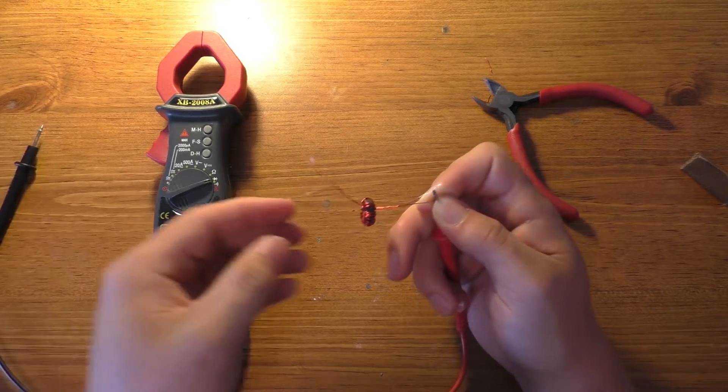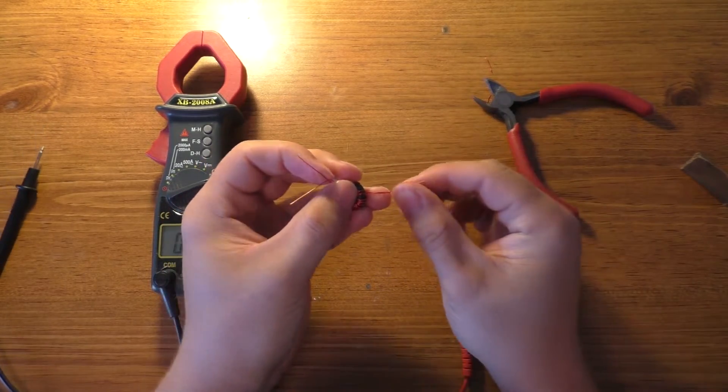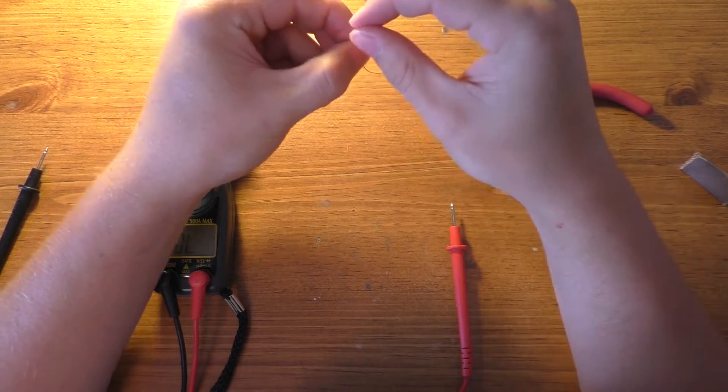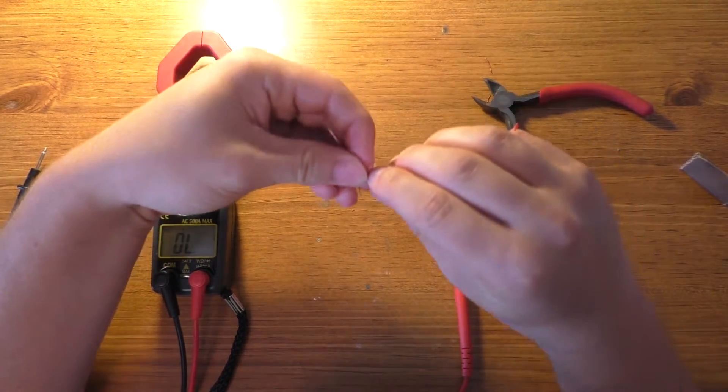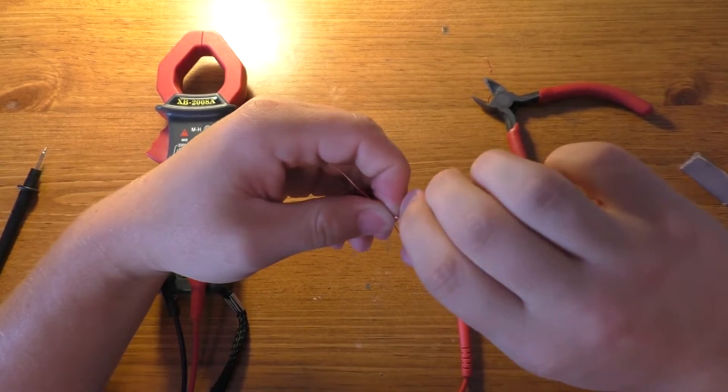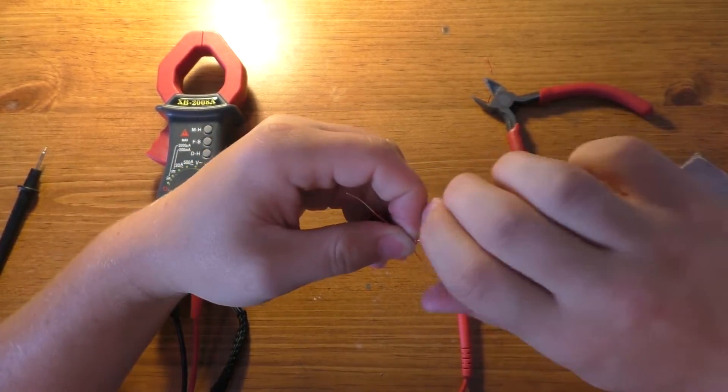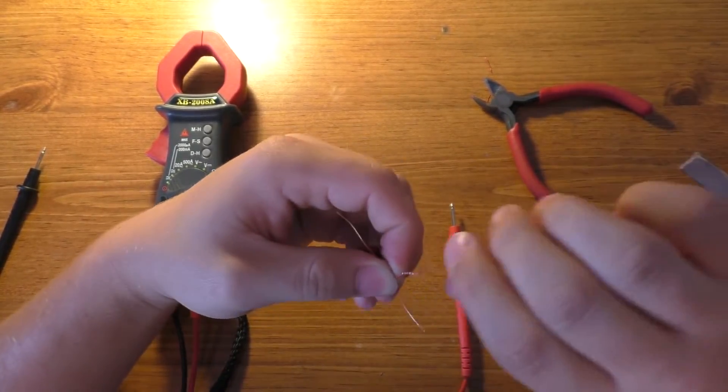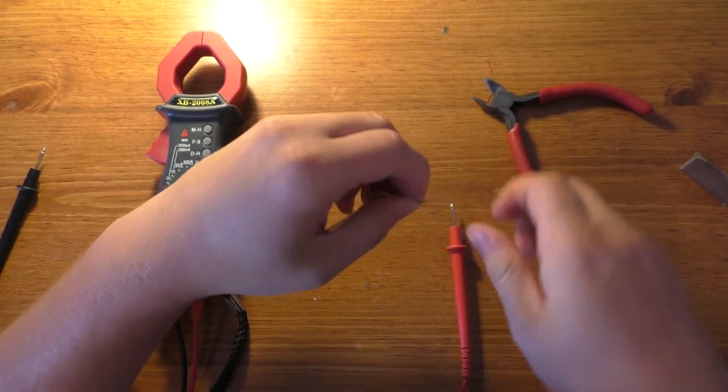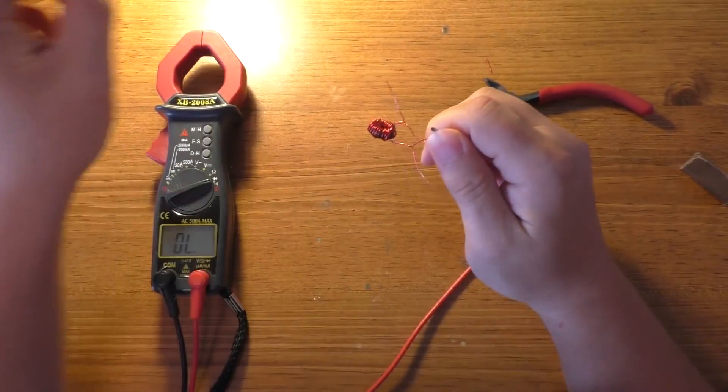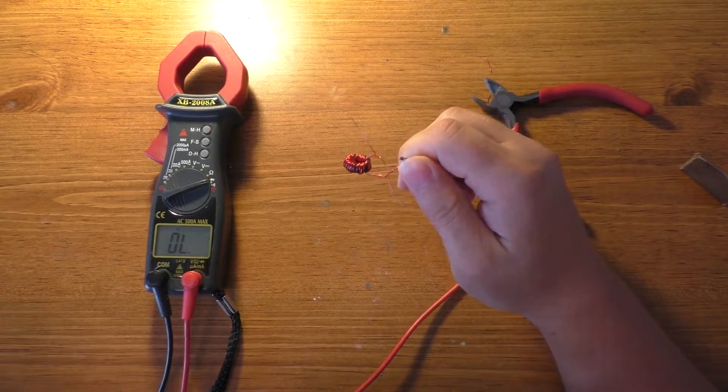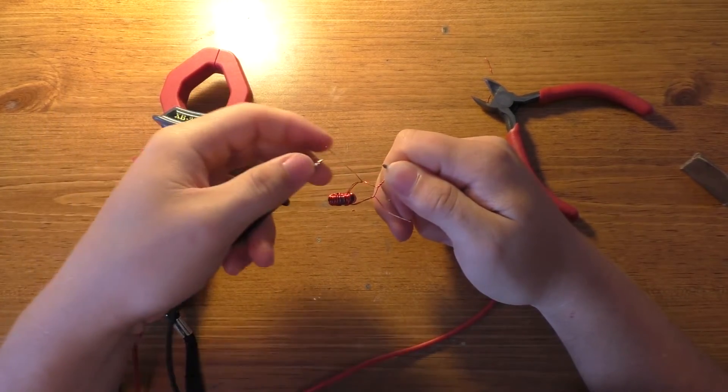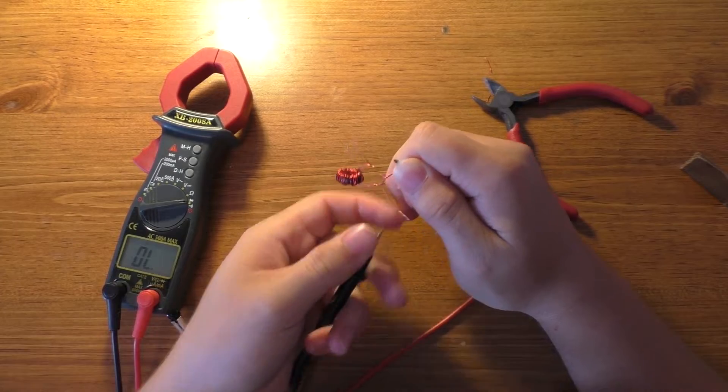So if I touch the probe to this one, I shouldn't get them to beep like that. And the ones that are not connected are the ones that you want to twist together. Usually the way I will do this is just twist it together and I like to put a little bit of solder on them but you don't really have to. And now if you check this again, you should be able to put the probe on there and then on the other two wires there should be a connection to both of them. So if I touch this wire it should beep, if I touch this wire it should also beep.